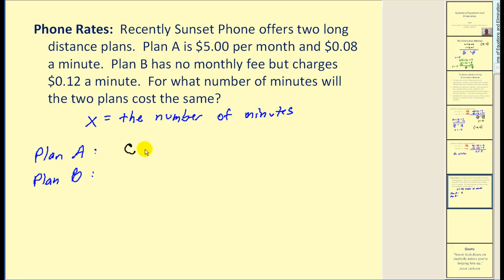Let x equal the number of minutes. If we let c equal the total cost for the month, for Plan A, we have a fixed cost of $5 and a variable cost of 8 cents per minute. To find the total cost for the month, we'd take the cost per minute, multiply it by the number of minutes, which is x, and add the fixed cost of $5. For Plan B, the total cost for the month is simpler. It's just 12 cents per minute, which we'd represent as 0.12 times x. There's no fixed cost for Plan B.